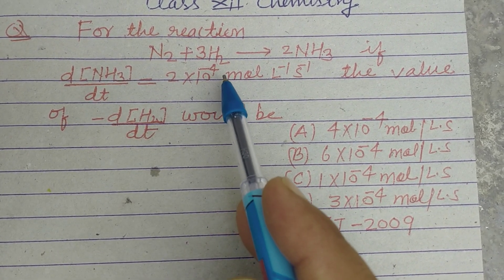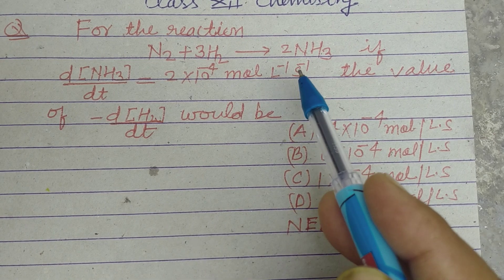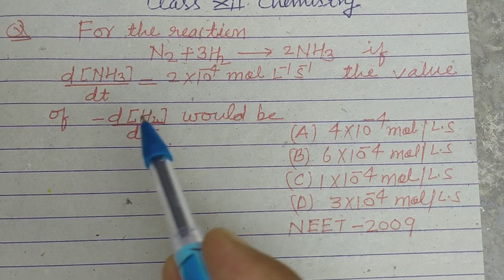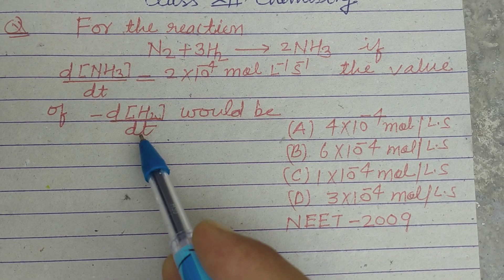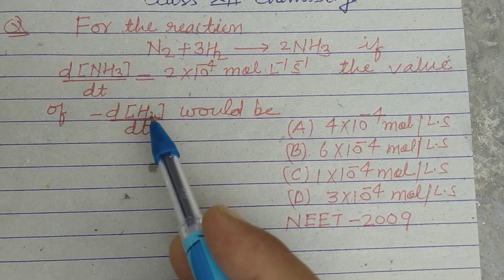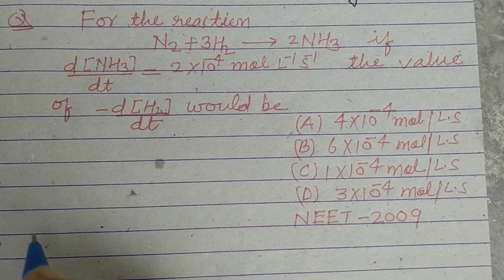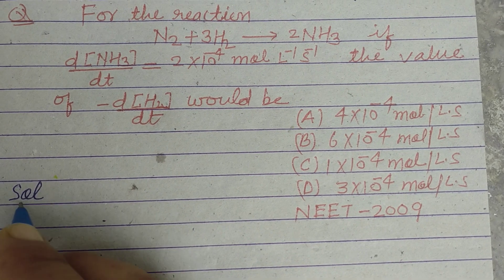2×10^-4 mole per liter per second, the value of d[H2]/dt or the rate of disappearance of H2 would be. So student, as you know that...